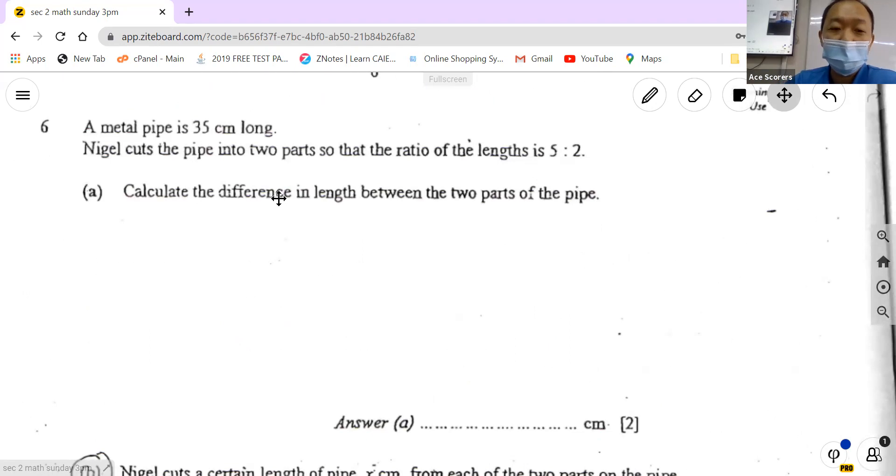Next one. This one looks easier, it is way easier. It's like a public school math question. What's the answer? Fifteen. Yeah, it's 15. Nigel cuts the pie to two parts of the ratio, the difference is 7. So we take 35 divided by 7 equals 5, then the difference is 3, so 5 times 3.